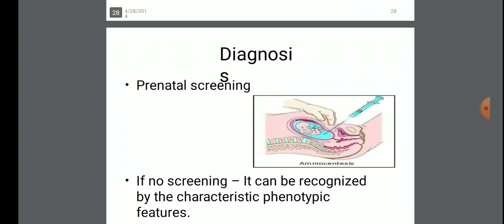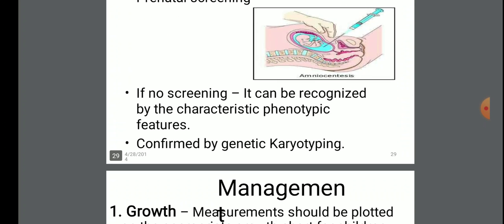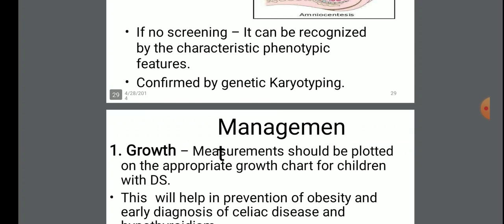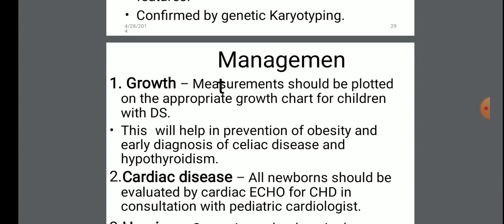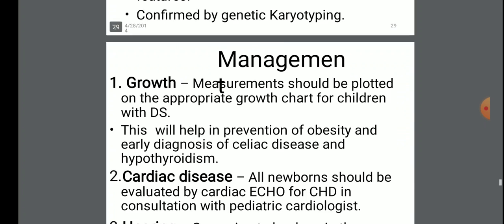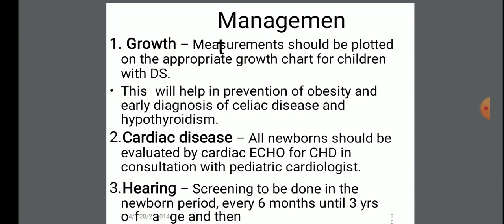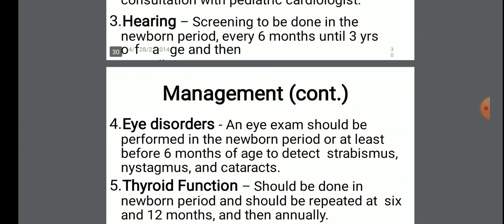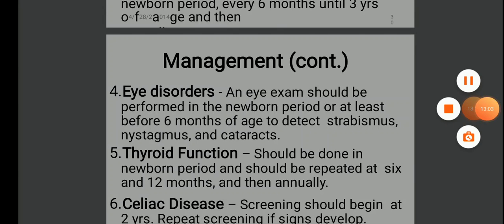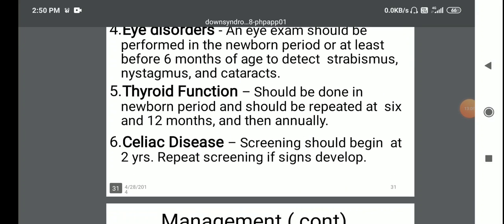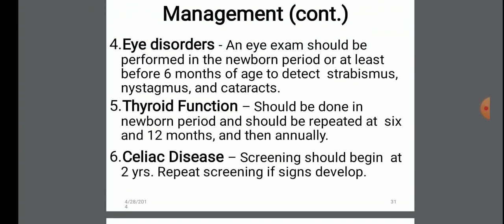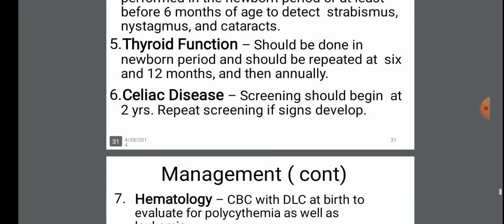Diagnosis involves prenatal screening. If no screening, it can be recognized by characteristic phenotypic features confirmed by genetic karyotyping. Management includes: plotting measurements on the appropriate Down syndrome growth chart; evaluating all newborns by cardiac echo or 3D echo in consultation with a pediatric cardiologist; hearing screening; eye disorder assessment; thyroid function and celiac disease screening beginning at 2 years, with repeat screening if signs develop.